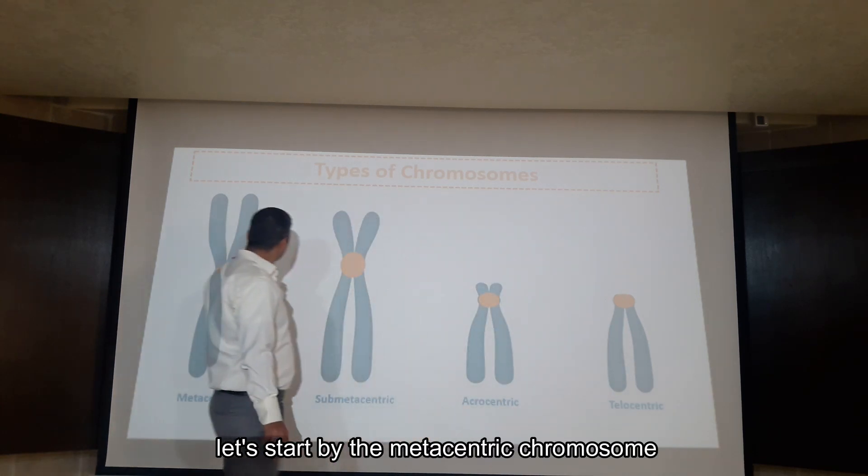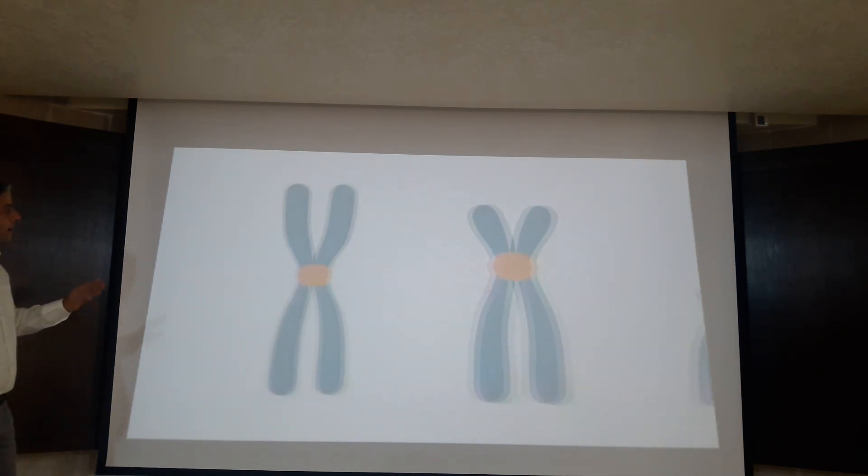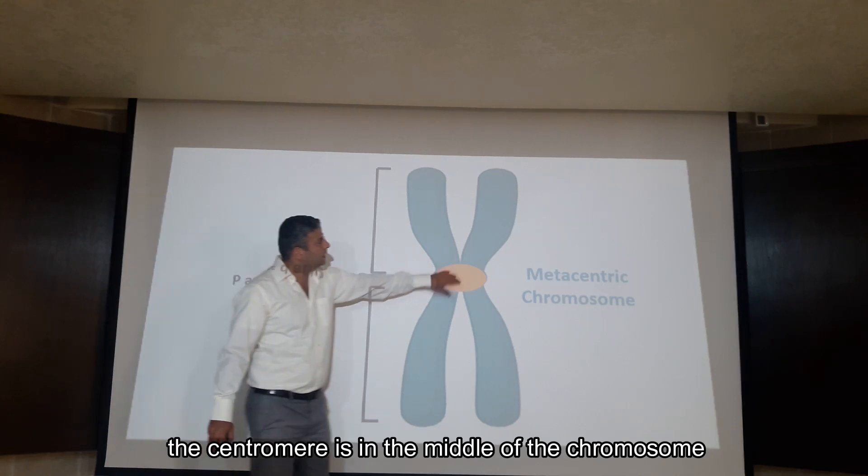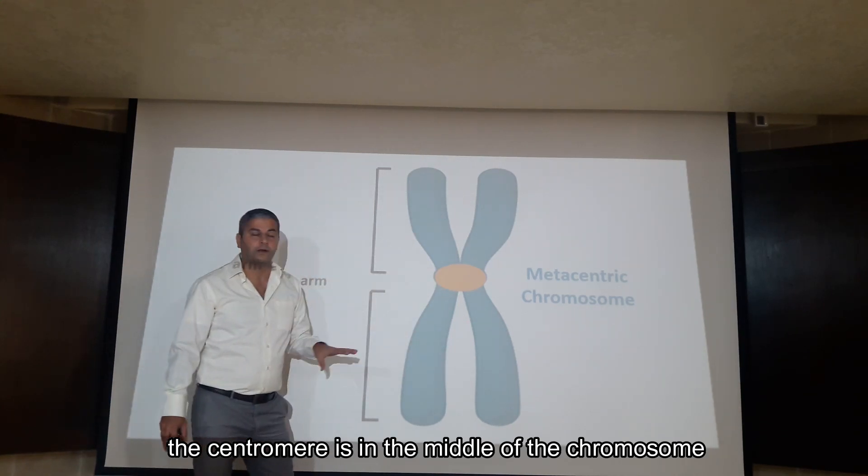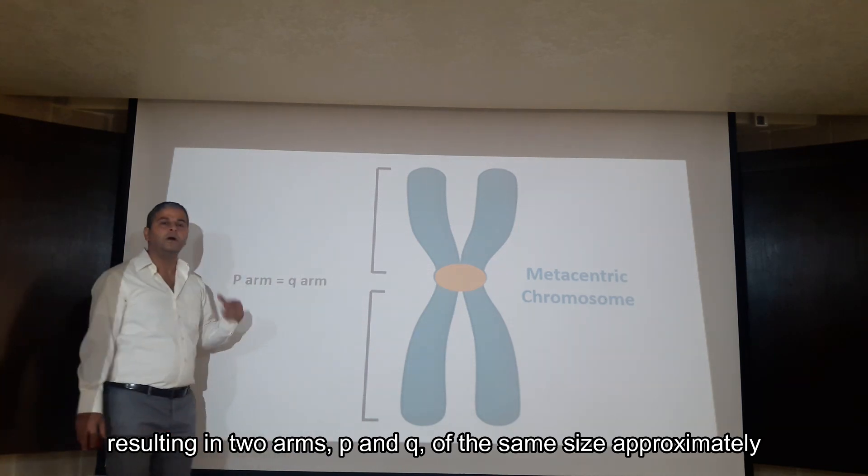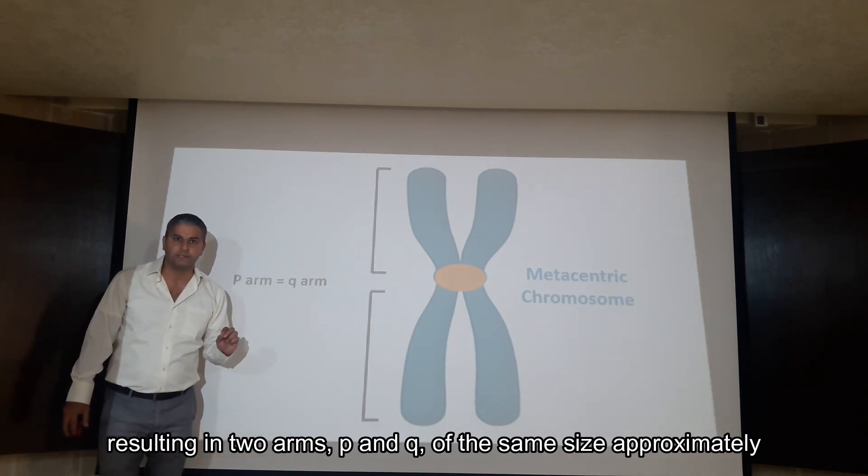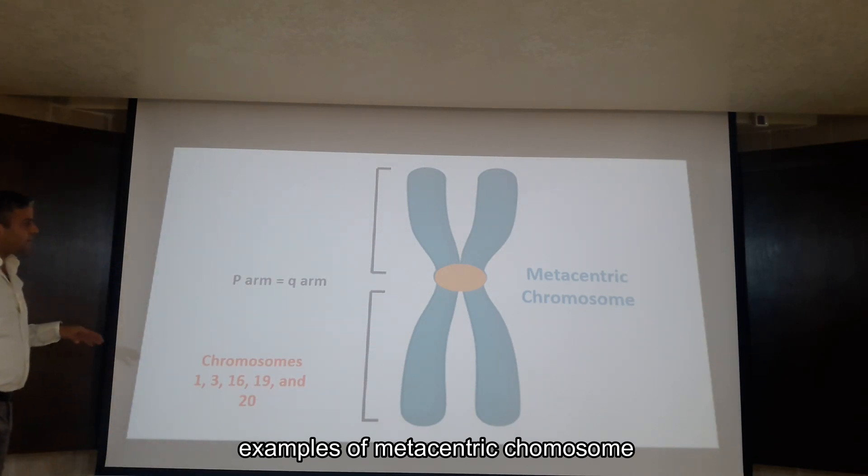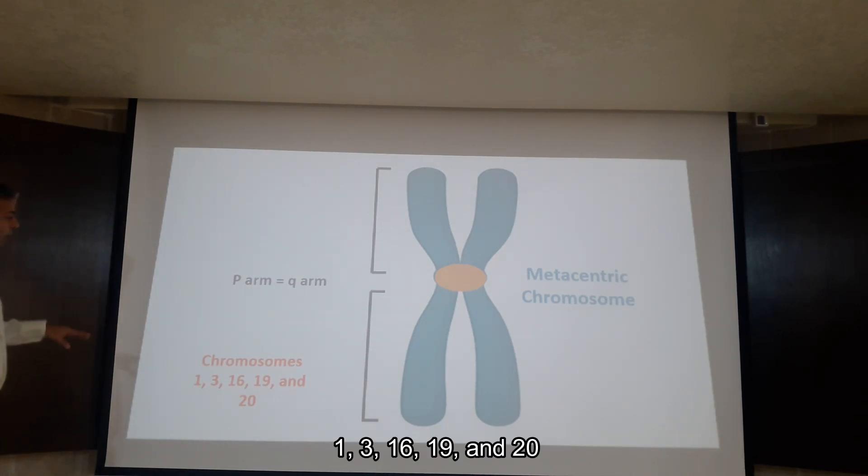Let's start by the metacentric chromosome. In the metacentric chromosome, the centromere is in the middle of the chromosome, resulting in two arms, P and Q, of the same size approximately. Examples of metacentric chromosomes: 1, 3, 16, 19 and 20.